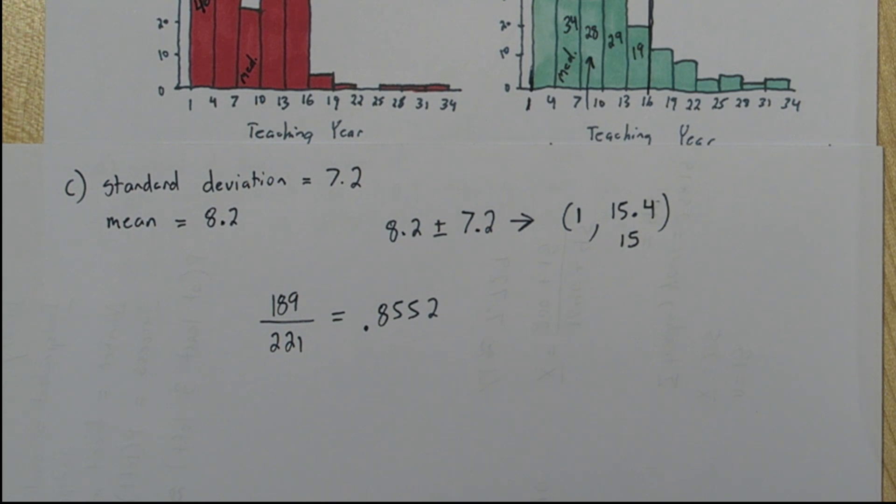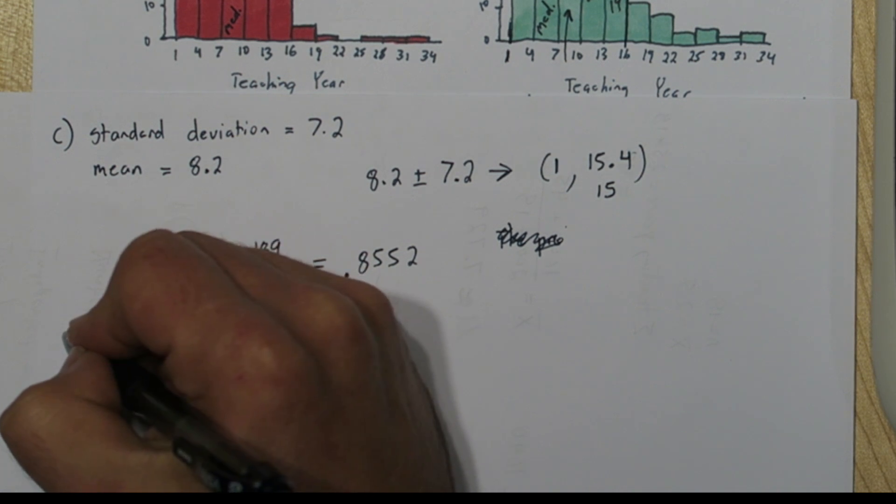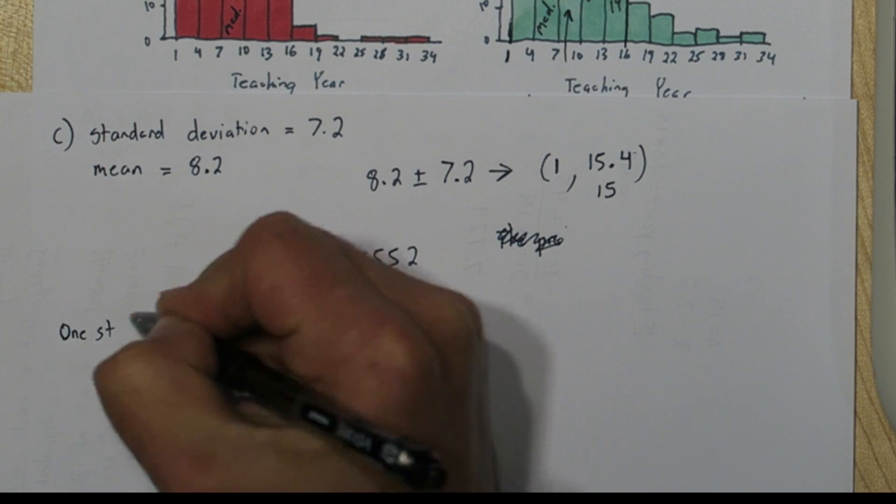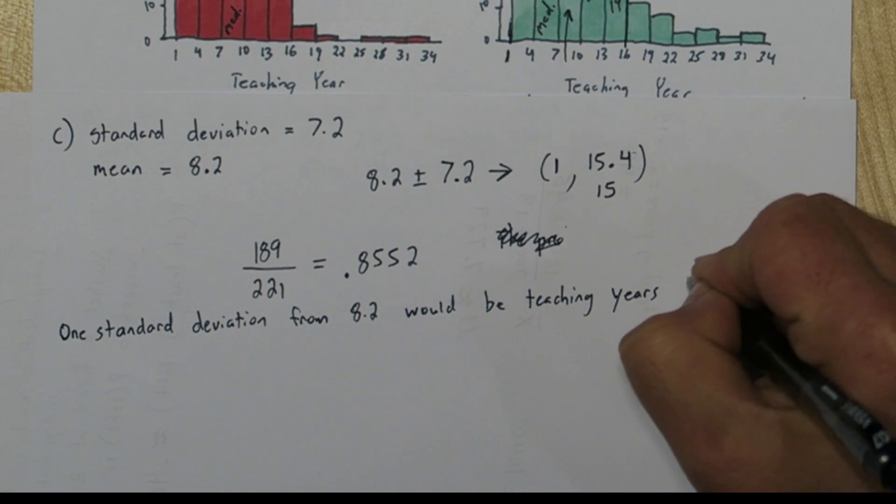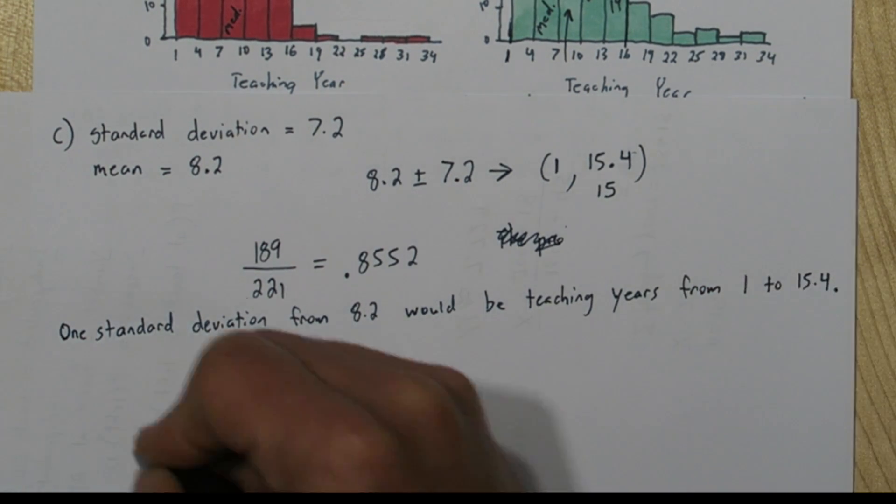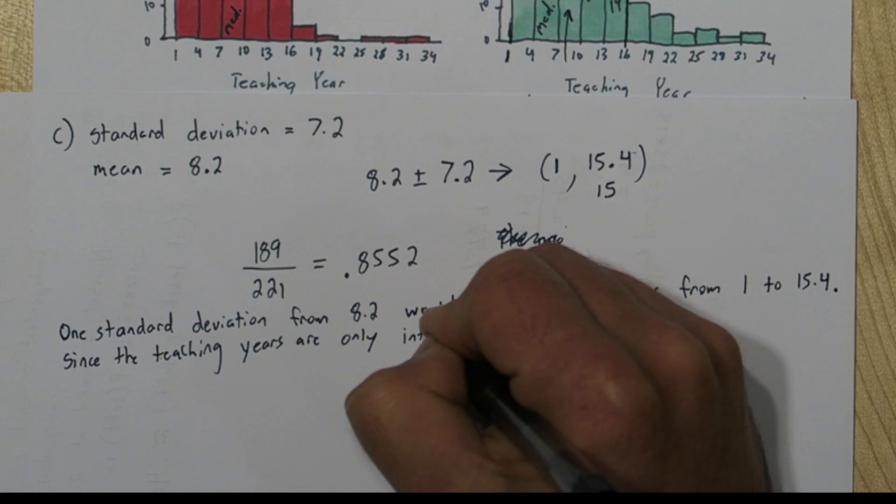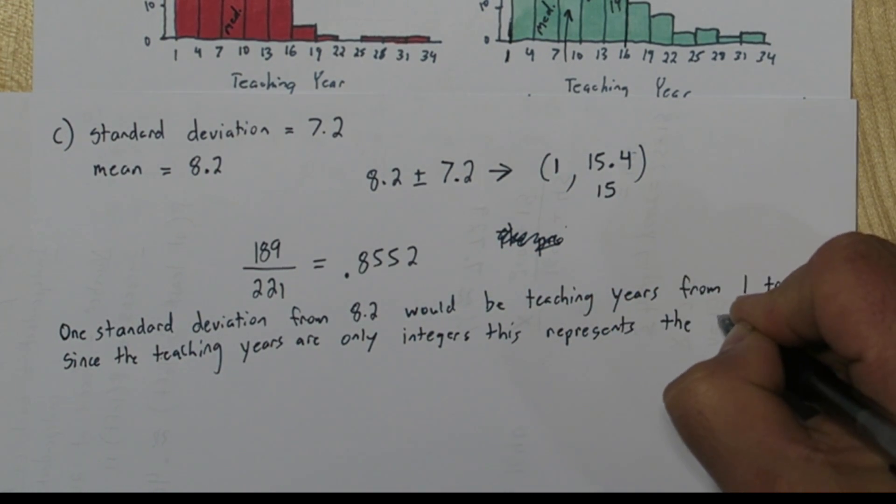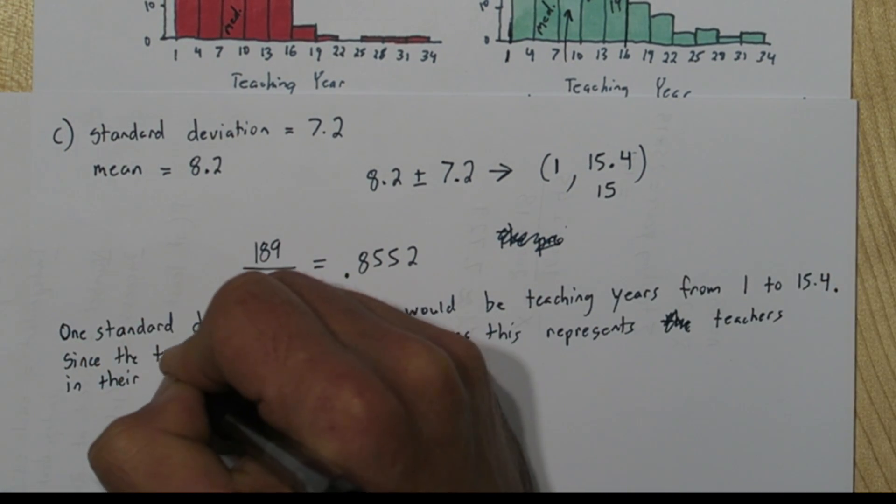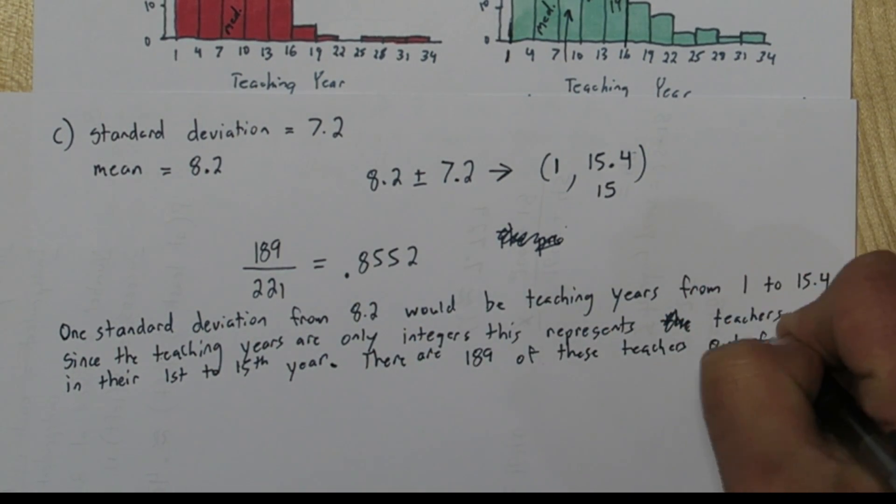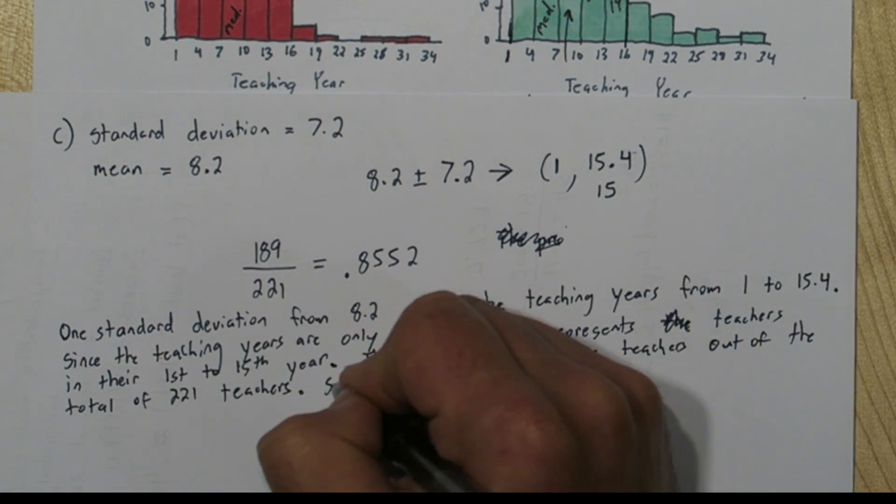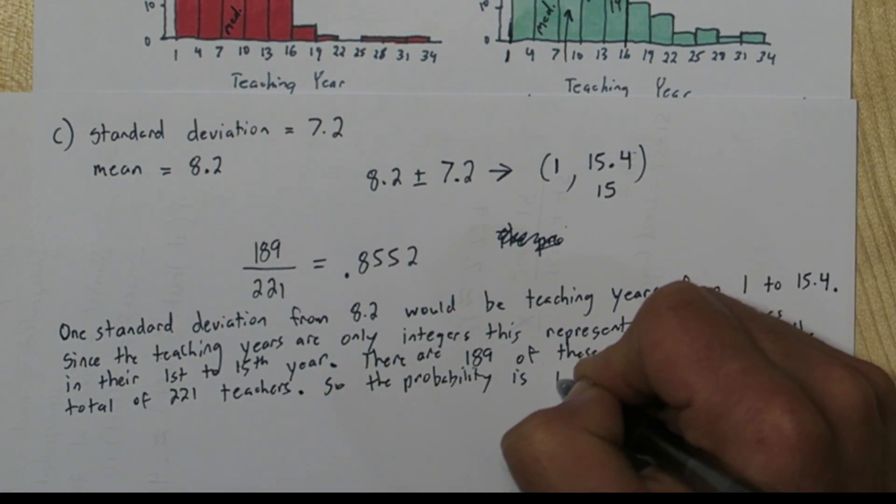As you can see, that number is very different than what the empirical rule would give us, 0.68. Now it says justify your answer, so now that we have the probability, let's focus on justifying the answer. We can say one standard deviation from 8.2 would be teaching years from 1 to 15.4. Since the teaching years are only integers, this represents teachers in their first to 15th year. There are 189 of these teachers out of the total 221 teachers. So the probability is 189 out of 221, or 0.8552.